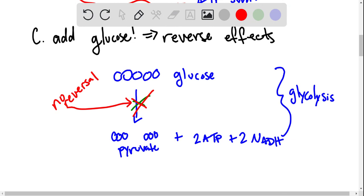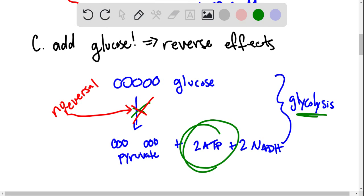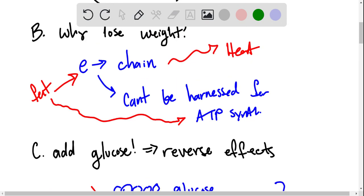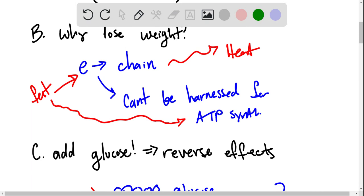So if we're adding glucose, what's happening is glycolysis is going to happen and more ATP is going to be produced. And so having that ATP present means that we don't need to be pulling from the fat to get it out.